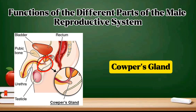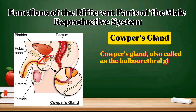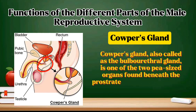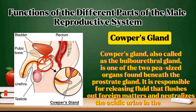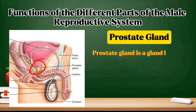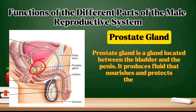Cowper's gland: also called the bulbourethral gland, it is one of two pea-sized organs found beneath the prostate gland. It is responsible for releasing fluid that flushes out foreign matter and neutralizes the acidic urine in the urethra. Prostate gland: located between the bladder and the penis, it produces fluid that nourishes and protects the sperm.